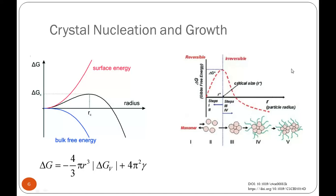Initially we have monomers in the liquid form, and then through external means such as under-cooling they come together and form a nucleus of critical radius, after which growth takes place.